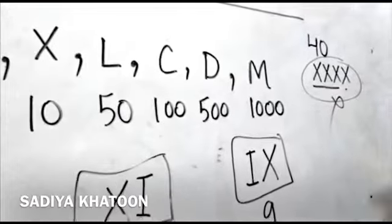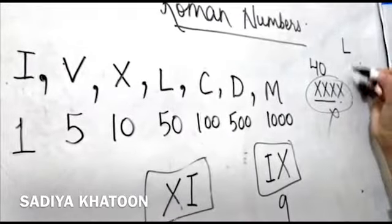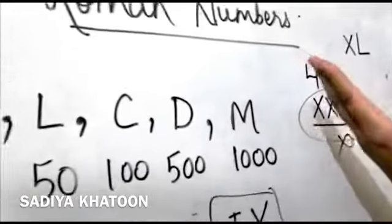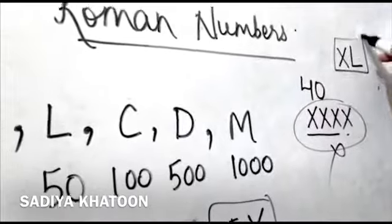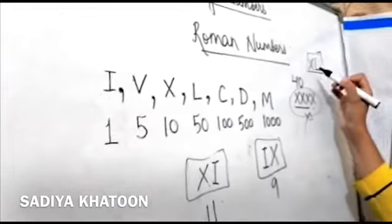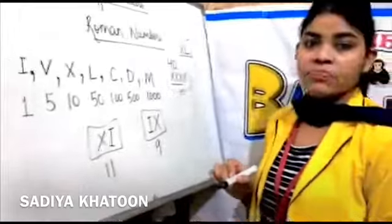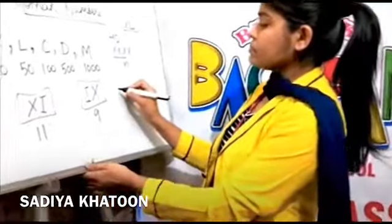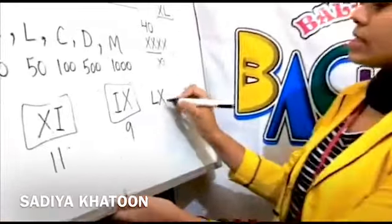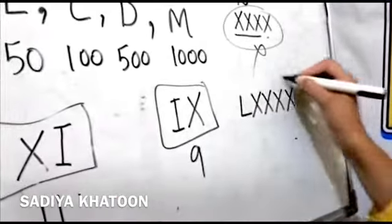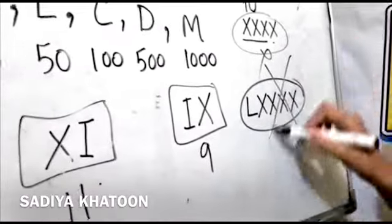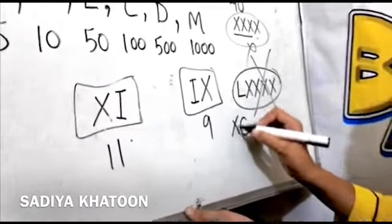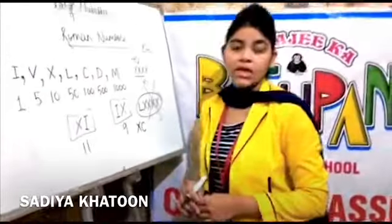To write 40, you write L (50) minus X (10): XL = 40. Similarly, to write 90, you do not write 50, 60, 70, 80, 90 as repeated symbols — that is wrong. Instead, you write C (100) minus X (10): XC = 90. That covers the topic of Roman numbers.